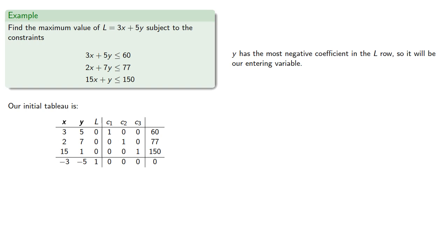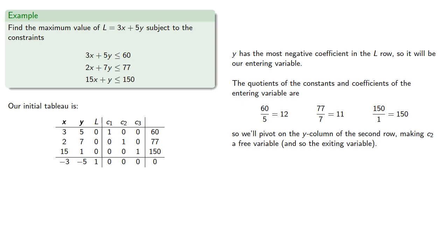Y has the most negative coefficient in the L row, so it will be our entering variable. The quotients of the constant and coefficients of the entering variable are. So we'll pivot on the Y column of the second row, making C2 a free variable, and so the exiting variable. And so row reducing gives us.